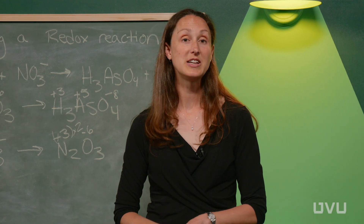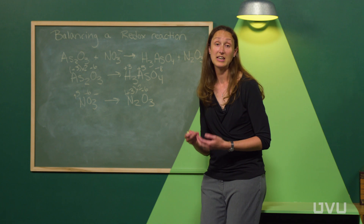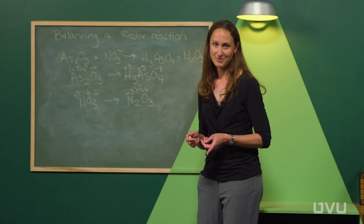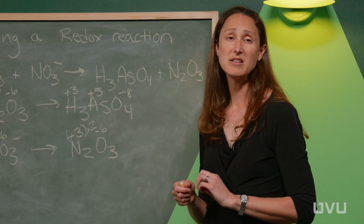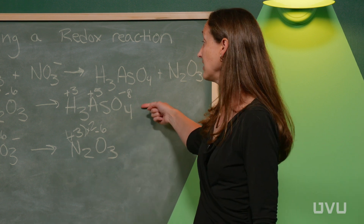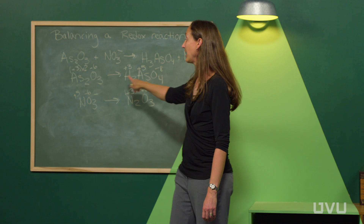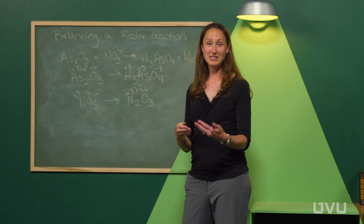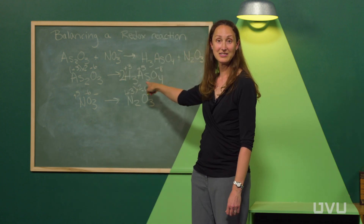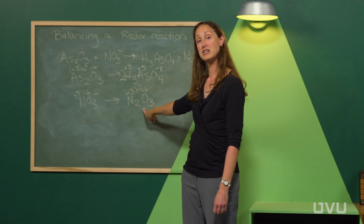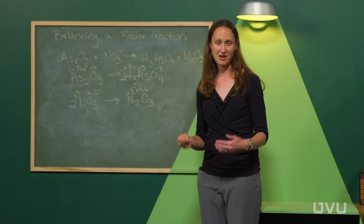Both oxidation and reduction are present as half-reactions, confirming this is a redox reaction. Now let's balance each half-reaction separately. The first step is to balance everything that's not oxygen or hydrogen. For arsenic, I have two on the left and one on the right, so I add a coefficient of two on the right. For nitrogen, I have two on the right and one on the left, so I add a coefficient of two on the left.